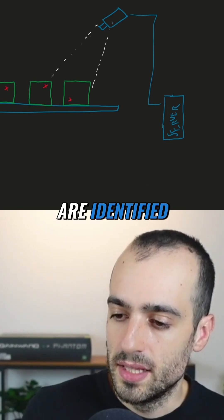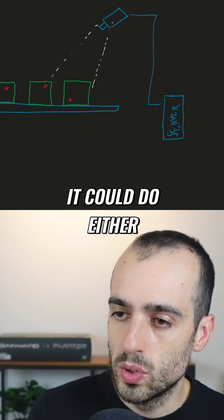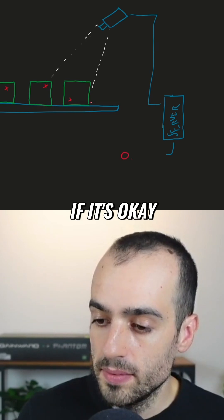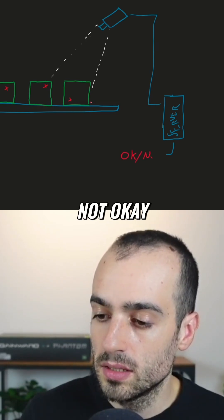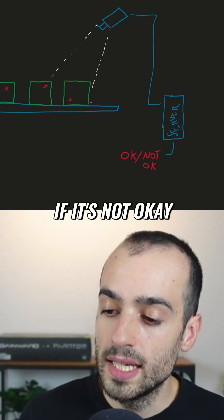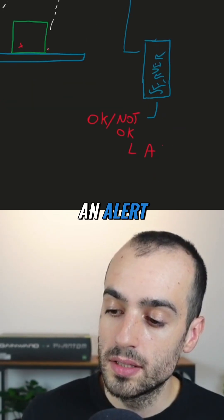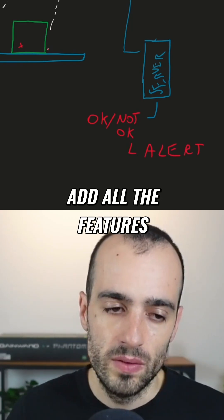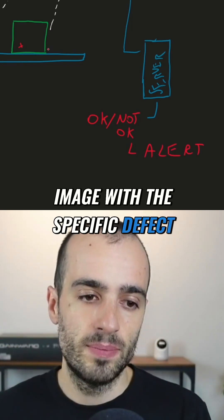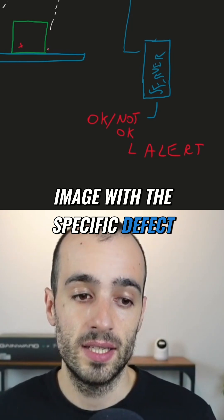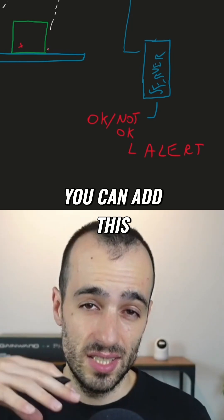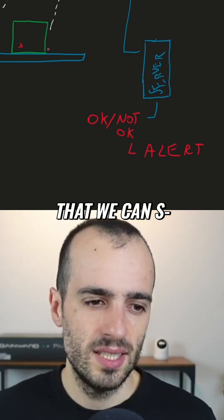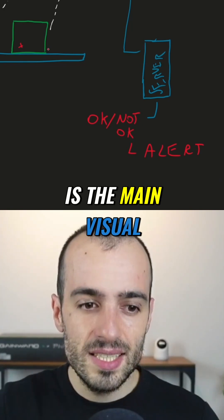When the products are identified, it could do either of these things. If it's okay or not okay — if it's not okay, it will send an alert. We can also add all the features of the case where you can save the image with the specific defect, you can send an email, you can add this to a CRM system. These will be details that we can see later.